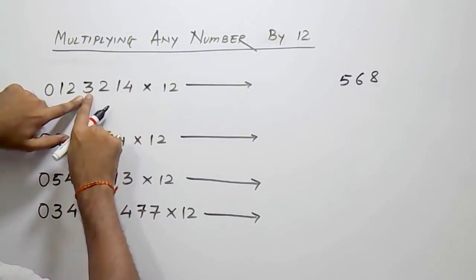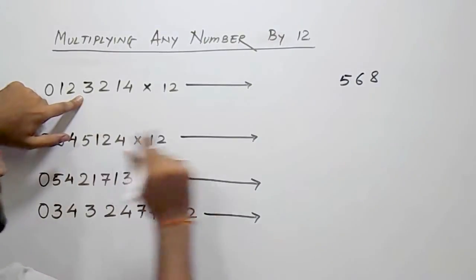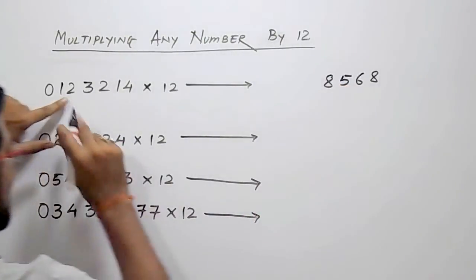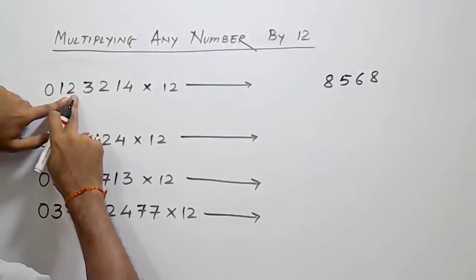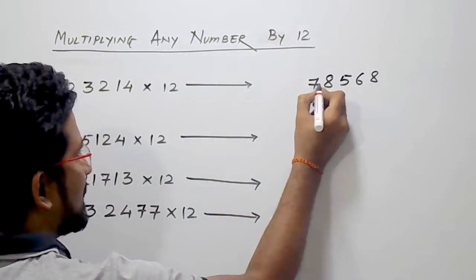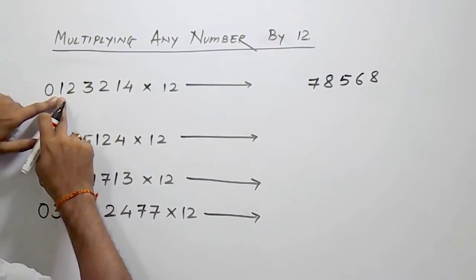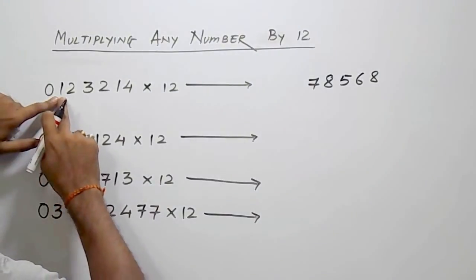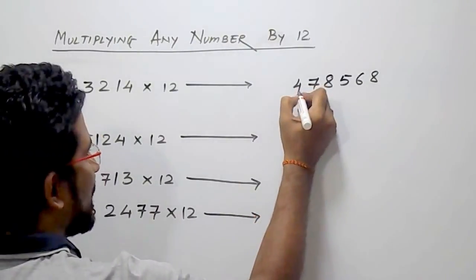Then 3 — 3's double is 6, 6 plus 2, that is 8. Then go for the next digit, that is 2 — 2's double is 4, 4 plus 3 is 7. Then next is 1 — 1's double is 2, 2 plus 2, that is 4.